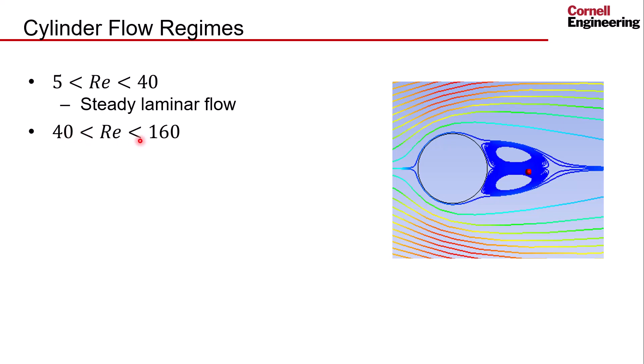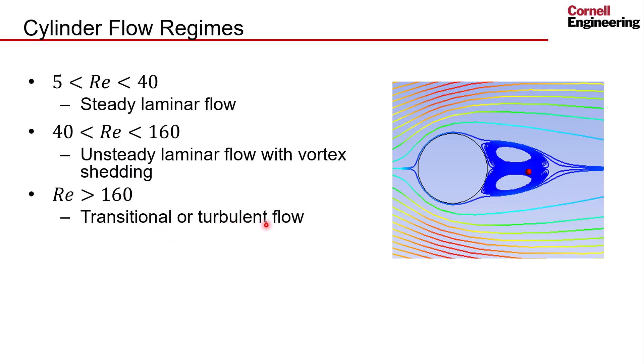Between a Reynolds number of about 40 and 160 we get unsteady laminar flow with vortex shedding, and then above a Reynolds number of about 160 we get transitional turbulent flow. Here the focus is on simulating steady laminar flow and getting a result that looks like that.